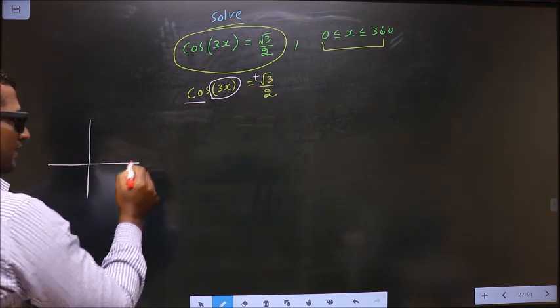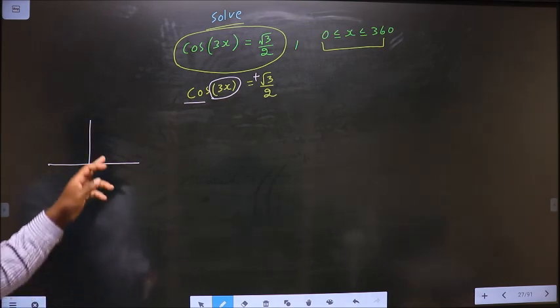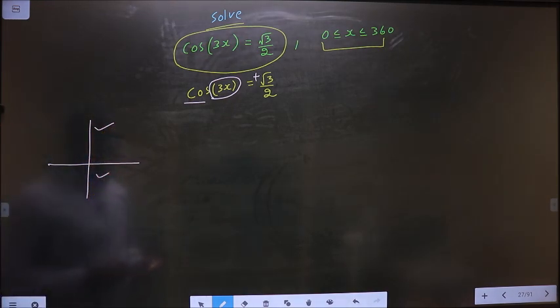So now you should check in what all quadrants is cos positive. It's all silver tea cups. Cos is positive in the first and in the fourth.